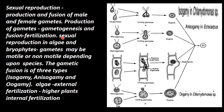In lower plants such as algae, the gametes may be motile or non-motile — that depends upon the species. In sexual reproduction in algae and bryophytes, the nature of the gametes varies by species.